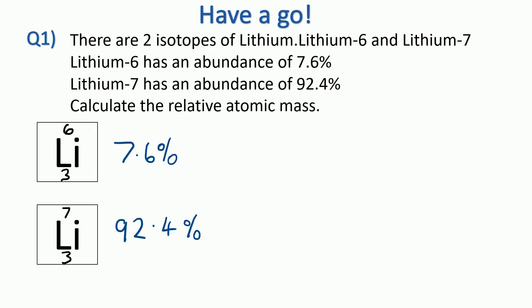Then we do 92.4 divided by 100 times 7, and that comes to 6.468. Add the two numbers together and the relative atomic mass for lithium is 6.924.